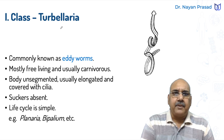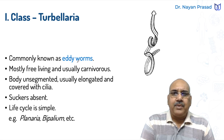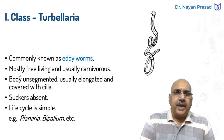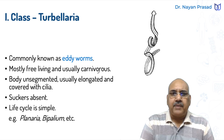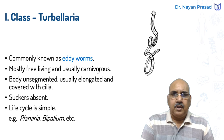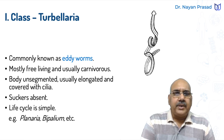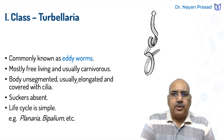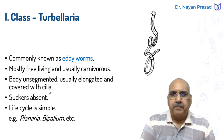First, about class Turbellaria. The members of this group are commonly called eddy worms. Remember the examples: Bipallium and Planaria. They are mostly free living and usually carnivores, feeding upon animals or animal products.